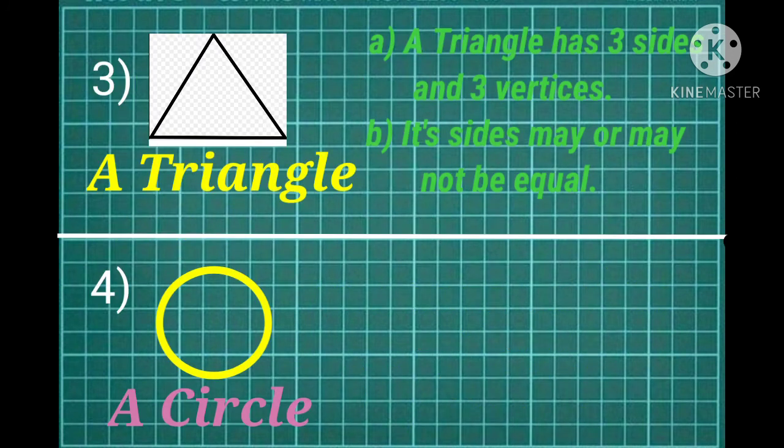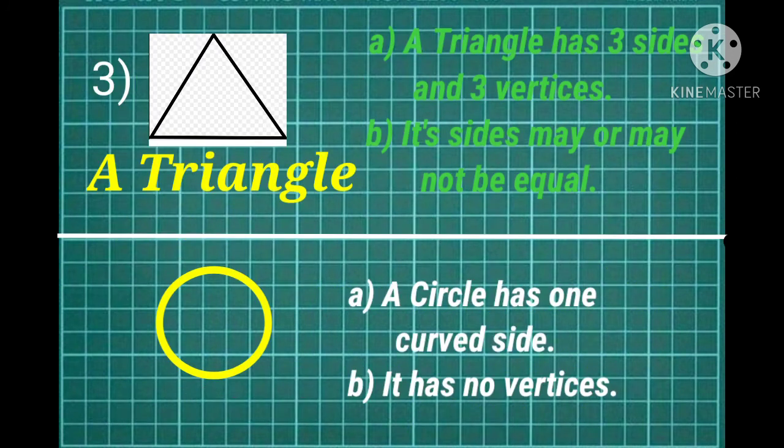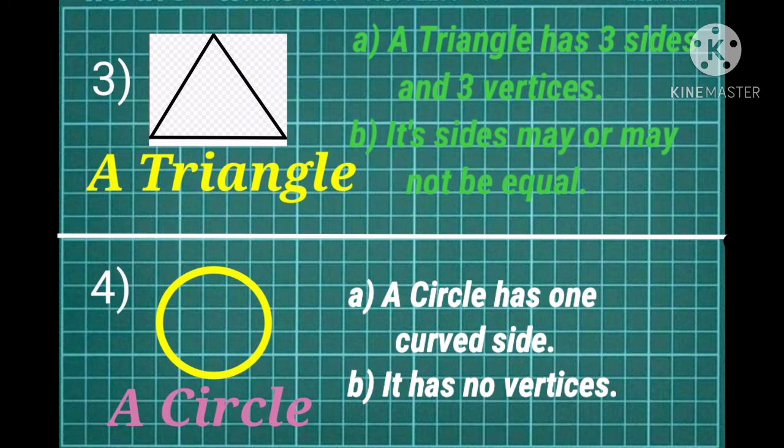Now the third one is triangle. A triangle has 3 sides and 3 vertices. Its sides may or may not be equal.